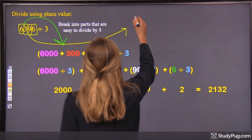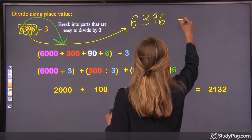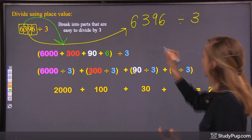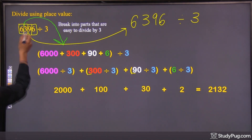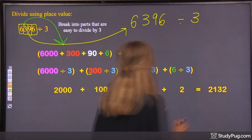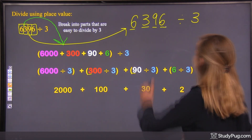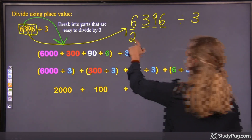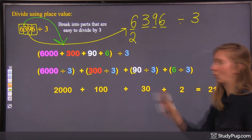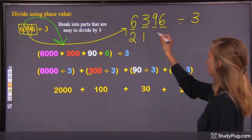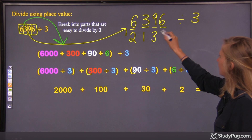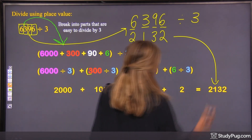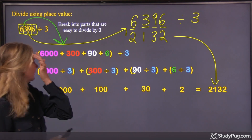6,396 divided by 3. Another way of dividing using place value is to do it directly. We identified four parts, and they're all divisible by 3. So: 6 divided by 3 is 2 — write a 2 underneath the 6. 3 divided by 3 is 1. 9 divided by 3 is 3. And 6 divided by 3 is 2. So we got 2,132 — the same answer as when we wrote out all the steps.